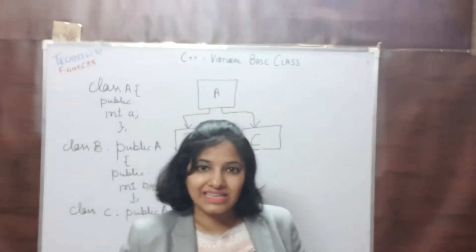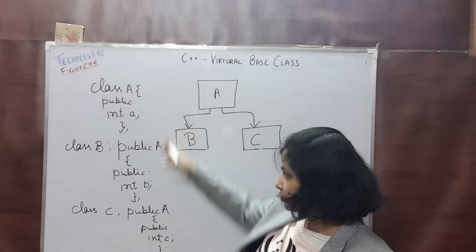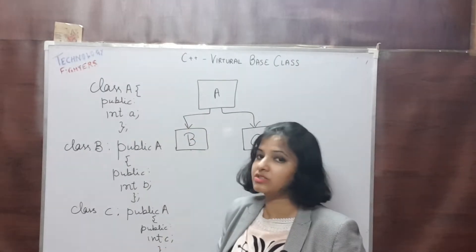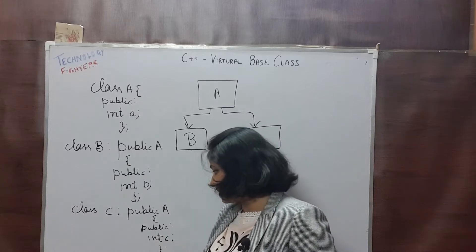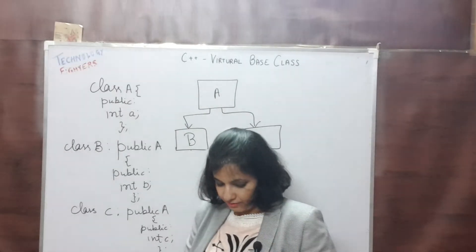So as you can see, there is no problem up to now. There is no ambiguity. We can easily refer which one is A, which one is B, and which one is C.